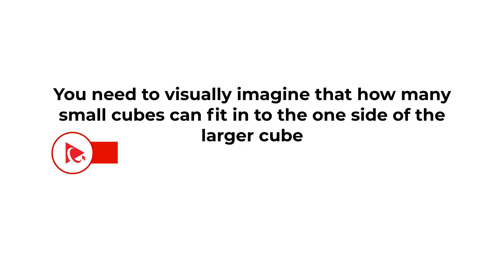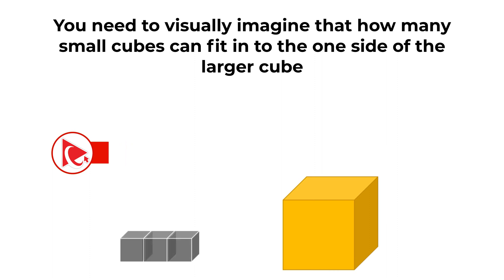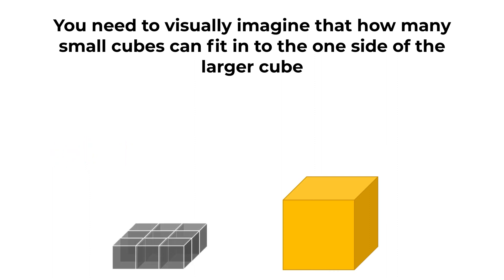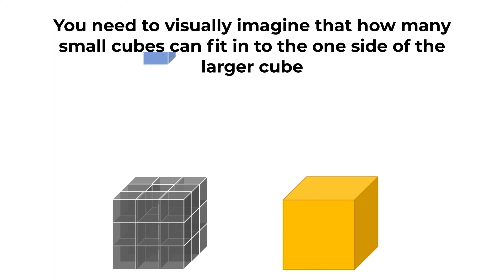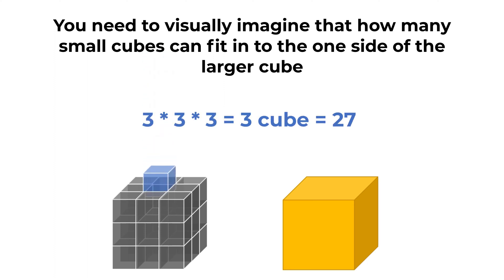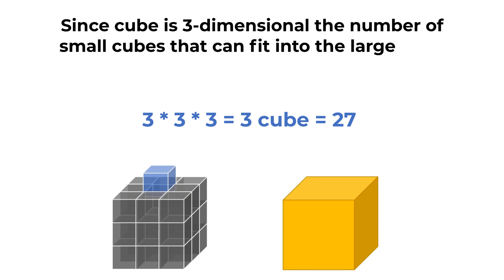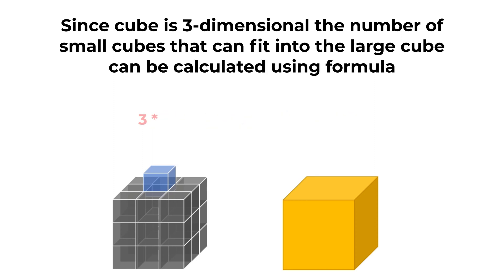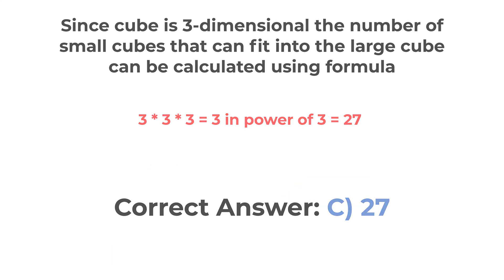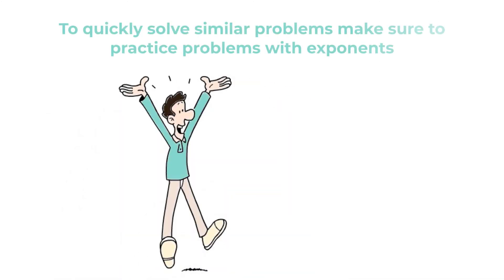To solve this, you need to visually imagine how many small cubes fit on one side of the larger cube. Three small cubes can fit on each side. Since a cube is three-dimensional, the number of small cubes that fit into the large cube is calculated using the formula 3 × 3 × 3 — that's where the word 'cube' comes from — which equals 27. The correct answer is choice C: 27.